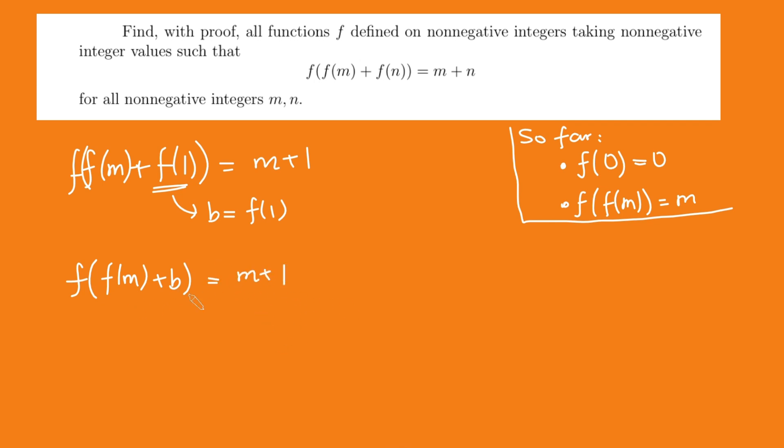And so we have f of f of m plus b equals m plus 1. But now what we can do is take f of both sides and we get f of f of f of m plus b equals f of m plus 1. But remember, f of f of f of m plus b, these two f's cancel out because remember we said f composed with f is just the identity function. So we get f of m plus b equals f of m plus 1. Or in other words, f of m plus 1 equals f of m plus some constant number.